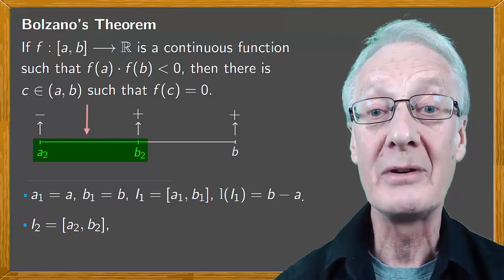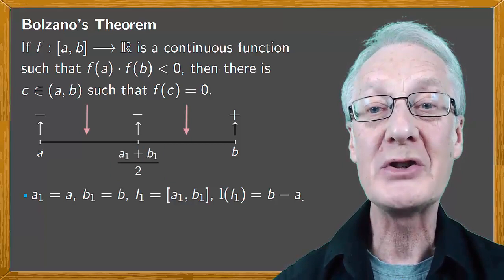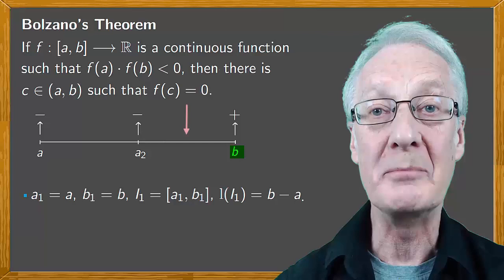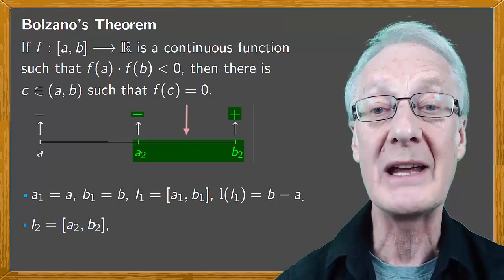In the other case if the image of the midpoint is negative, the sign change has to be in the right hand interval. Now a₂ is the midpoint, b₂ is at the right end, and we now have the interval [a₂, b₂] where the image is also negative on the left end, the image is positive on the right end, and the interval length is half of the original, (b - a)/2.